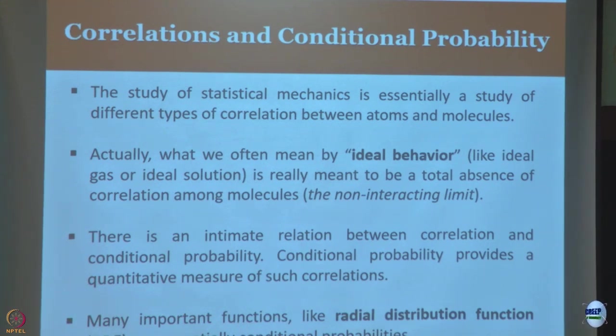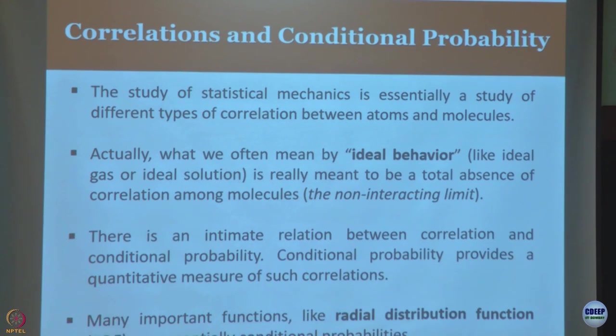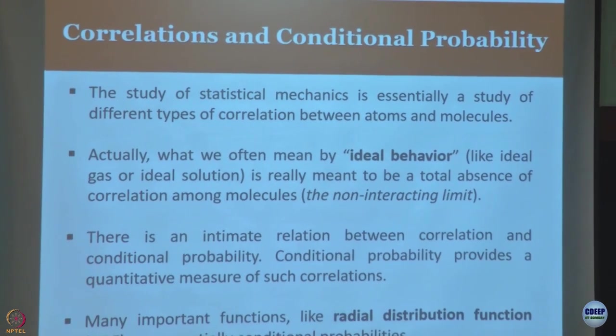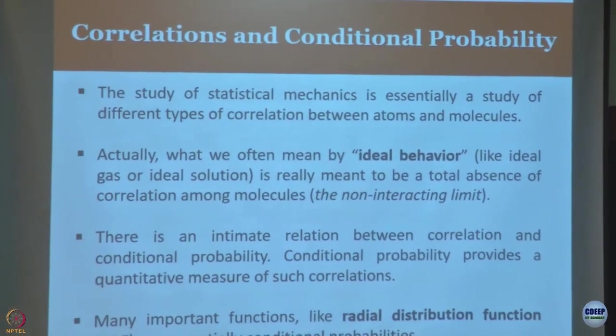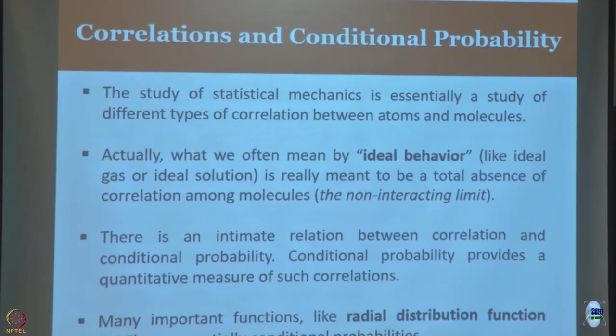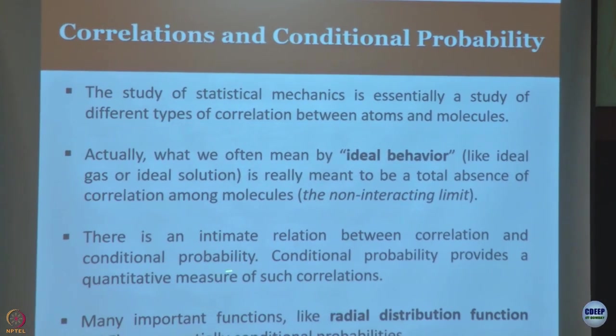Study of statistical mechanics is the study of different types of correlations between atoms and molecules, whether liquid, gas, or solid - superconductivity or whatever you do. This is essentially studies of these correlations in different forms. We call this ideal behavior - total absence of correlation among molecules. This is the noninteracting limit, which we will do later. And as I already said, correlation is essentially conditional probability.